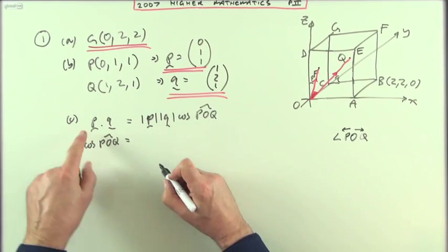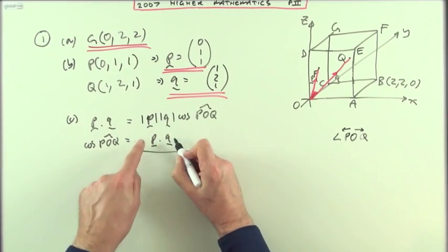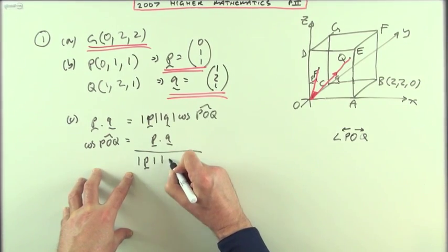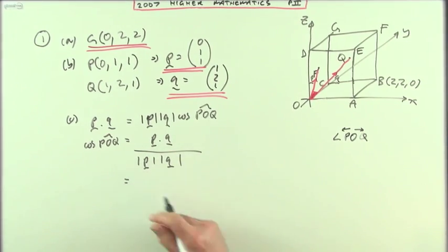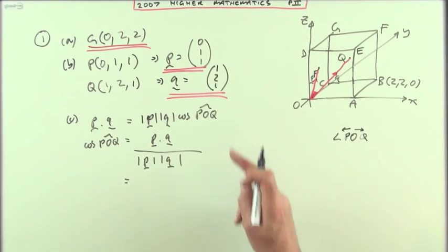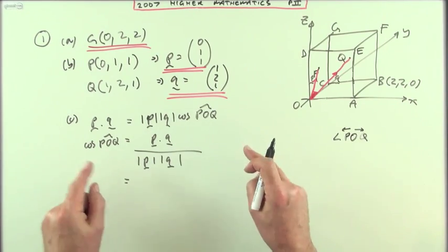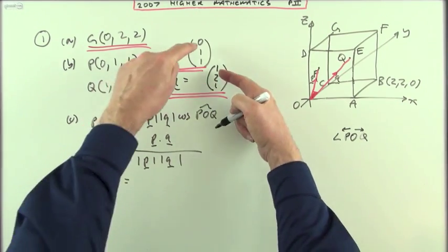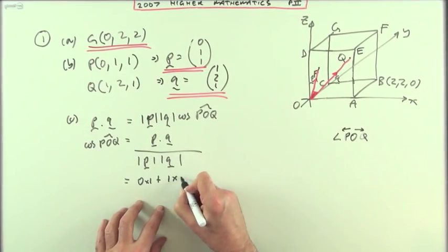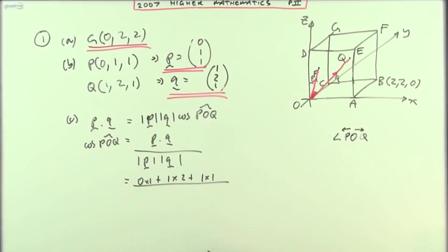So cos(POQ), being the angle that you want, will be P dot Q, the scalar product evaluated via the components, divided by the lengths of those two vectors. I'm not going to do all the bits and pieces over here—there's plenty of room to put all the calculation down in one. P dot Q means multiply and add the corresponding components: x-components zero times one, y-components one times two, z-components one times one. That's that taken care of.